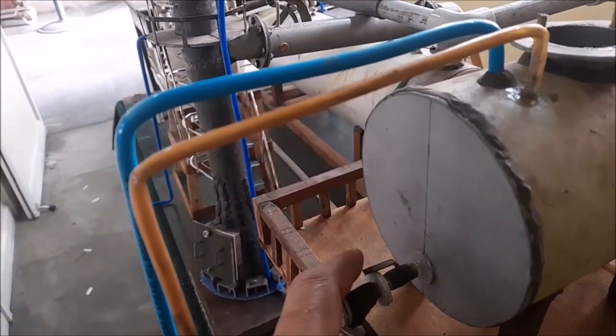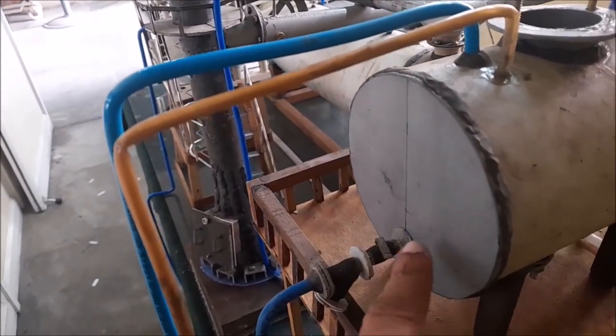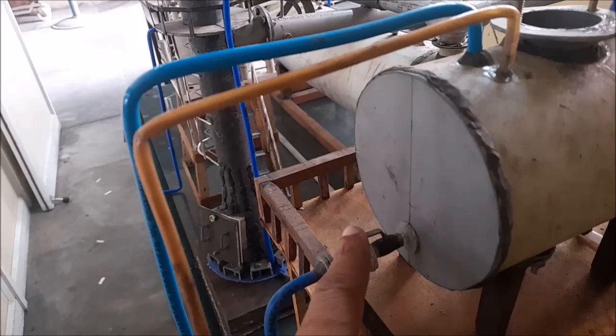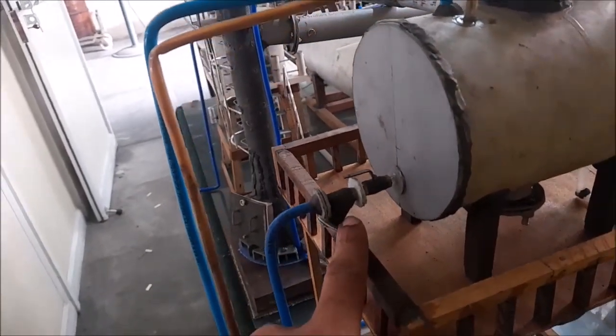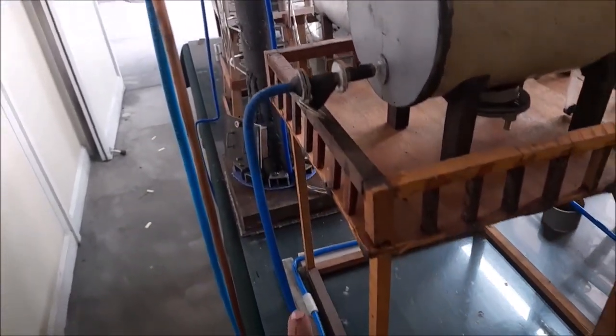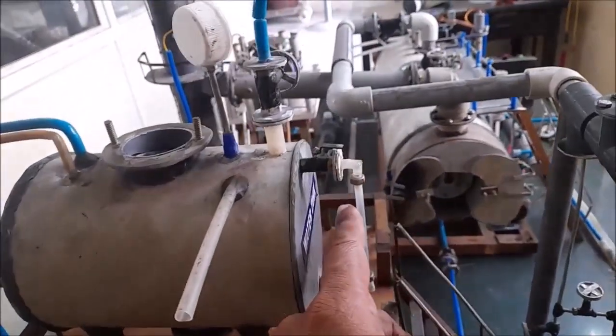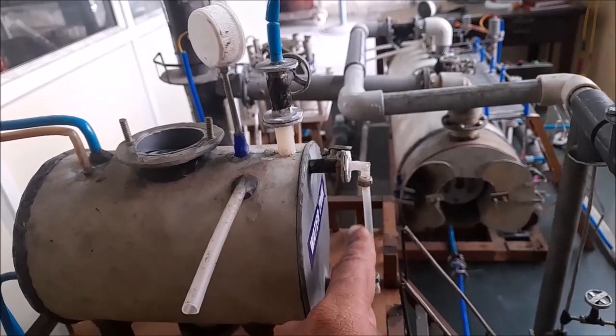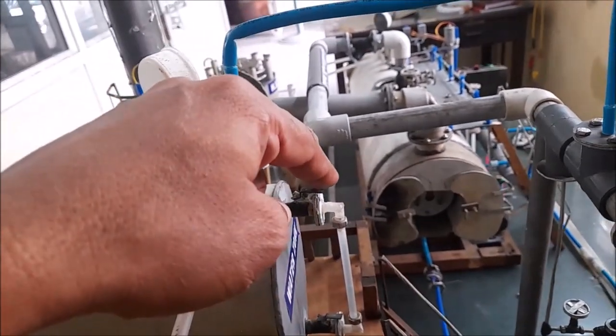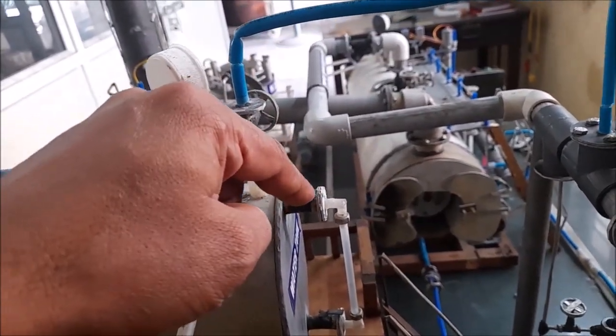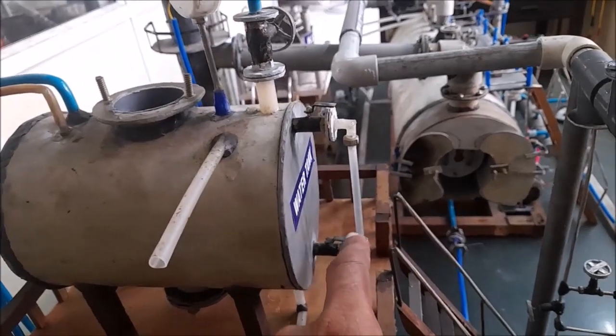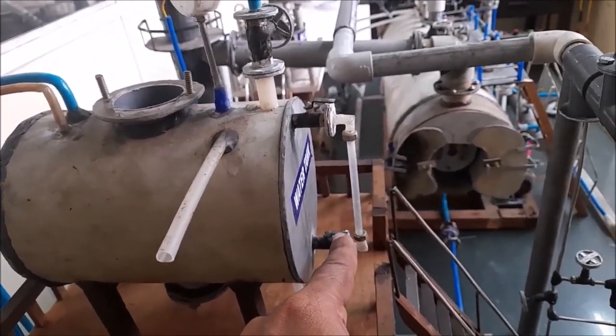This is the suction line of the water header to the feed pump. This is a strainer. This line goes into the water header. And this is the level gauge of the feed water tank. And at the bottom there are ball valves. Then we can open or close.